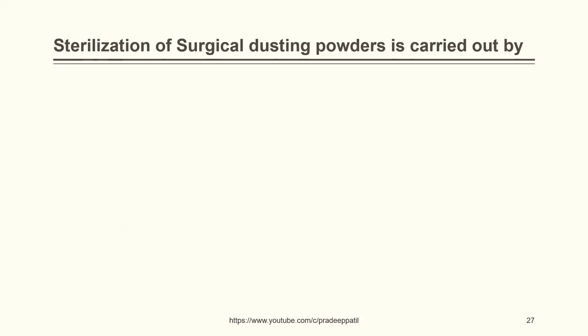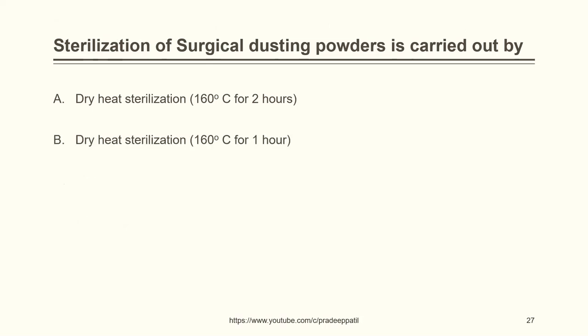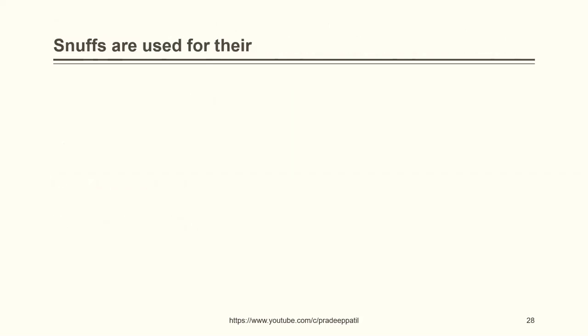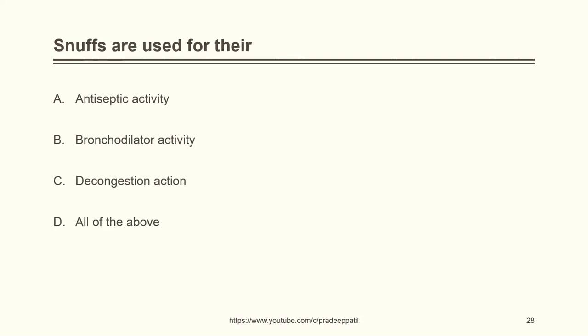Sterilization of surgical dusting powder is carried out by: dry heat sterilization at 160°C for two hours, dry heat sterilization at 160°C for one hour, moist heat sterilization, or gaseous sterilization. The correct answer is dry heat sterilization at 160°C for two hours. Snuffs are used for their: antiseptic activity, bronchodilator activity, decongestion action, or all of the above. The correct answer is all of the above.